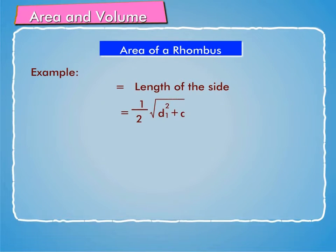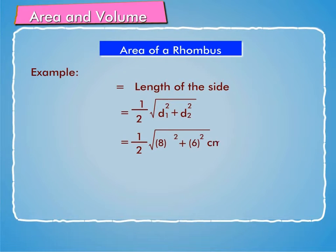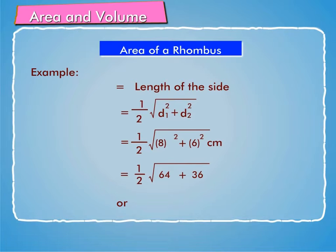Length of the side = (1/2)√(D1² + D2²) = (1/2)√(8² + 6²) cm = (1/2)√(64 + 36) = (1/2)√100 cm = (1/2) × 10 = 5 cm.